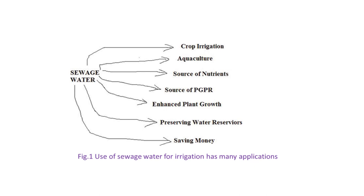Sewage water has different applications: it can be used in crop irrigation, aquaculture, as a source of nutrients, as a source of plant growth promoting rhizobacteria (PGPR), for enhanced plant growth, preserving and saving water reservoirs, and saving money — making the use of treated sewage water beneficial for irrigation purpose.